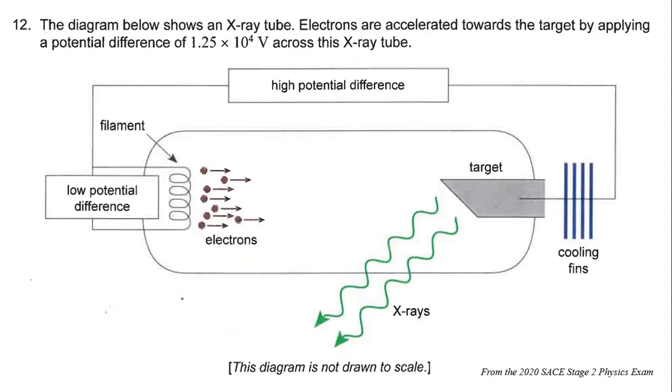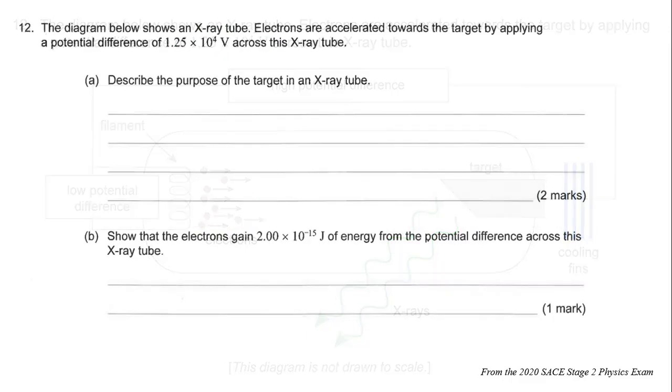The diagram below shows an X-ray tube. Electrons are accelerated towards the target by applying a potential difference of 1.25 × 10^4 volts across the X-ray tube. The key piece of that question being the 1.25 × 10^4 volts. So, describe the purpose of the target in the X-ray tube.